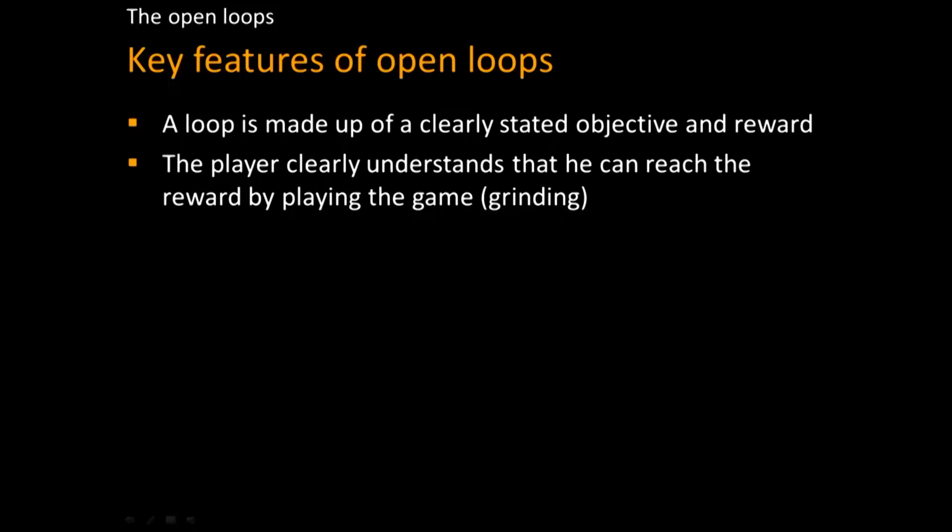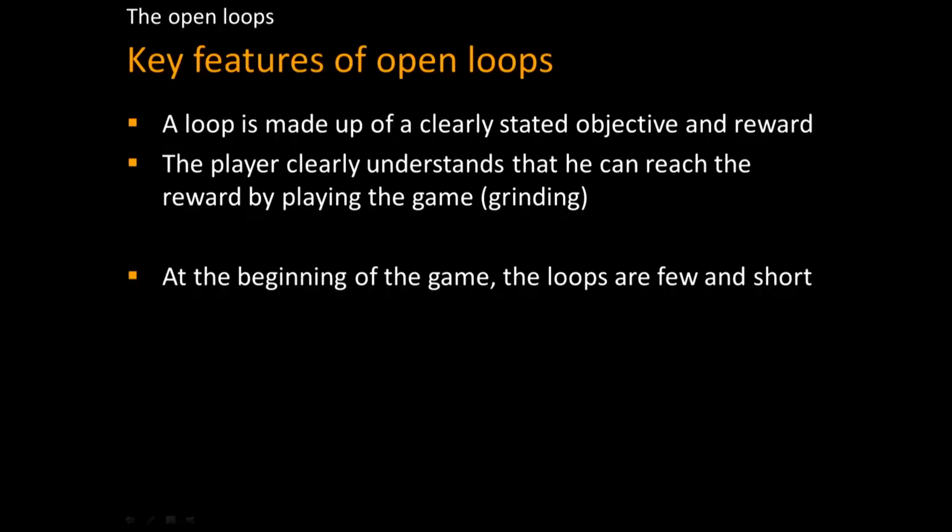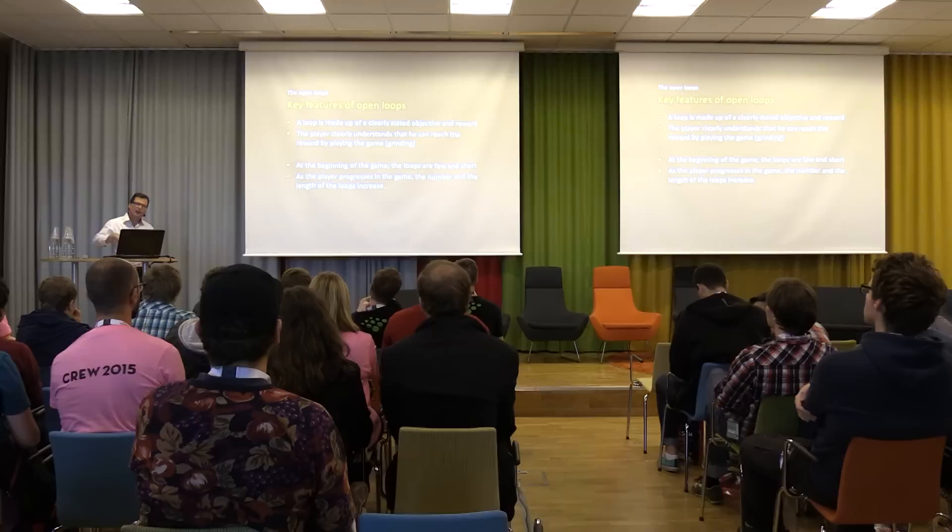As a summary: an open loop is made of an objective and a reward. The player understands he can reach the objective — he can close the loop by playing, which is grinding. At the beginning of the game, the loops are short but there are a lot of them. As you progress, the loops become more numerous and longer. They are so important — again we go back to retention. When you get people to discover the game, you want to keep them. On most games, they lose a lot of players on the very first day. This is why it's so important to keep people on day one. The first loops, which are very short, provide short-term objectives and are designed to keep people in the game and give them a reason to come back.